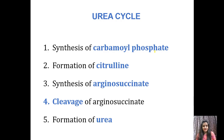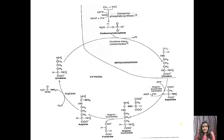Now we will see the urea cycle. The first step is synthesis of carbamoyl phosphate, the second step is formation of citrulline, the third step is synthesis of arginosuccinate, the fourth step is cleavage of arginosuccinate, and the fifth step is formation of urea. Note which processes occur in mitochondria and which in cytosol.